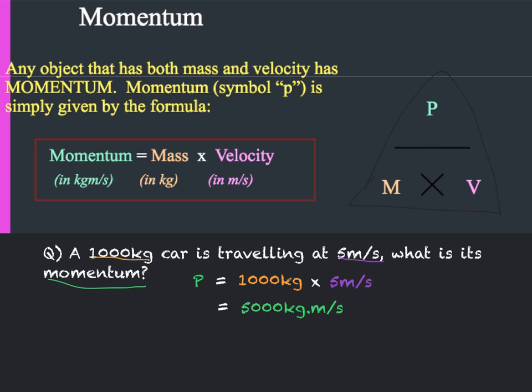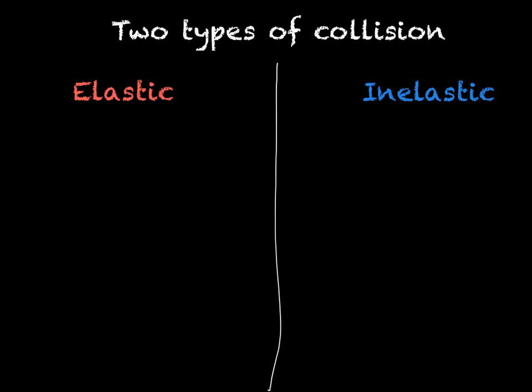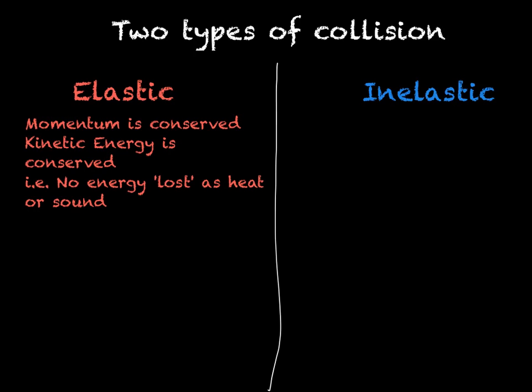We can then use this to look at the momentum before and after a collision. But first we need to look at elastic and inelastic collisions. Overall there are two types of collision: elastic and inelastic. In both types momentum will be conserved. However, in an elastic collision kinetic energy is also conserved, meaning no energy is dissipated or lost as heat or sound. In an inelastic collision, some kinetic energy will be lost as heat or sound and converted into other forms of energy.